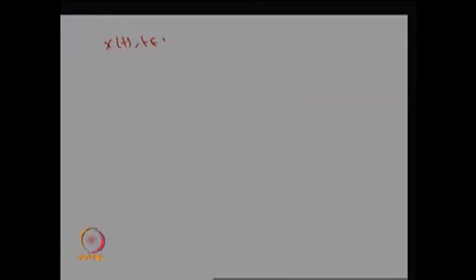Not only can we go for making a one-dimensional random variable or one-dimensional stochastic process — you can create a stochastic process that is one-dimensional, two-dimensional, or n-dimensional.